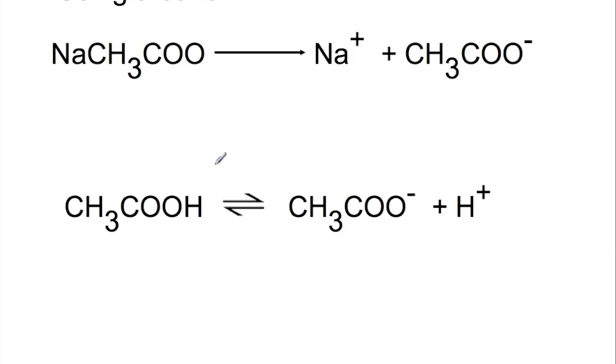How does a buffer work? Here we're looking at a buffer made from sodium ethanoate and ethanoic acid. Because sodium ethanoate is a salt, it will completely dissociate when it's in water. This gives a very high concentration of ethanoate ions. You also have ethanoic acid, which is in equilibrium because it's a weak acid. So you'll only have a small amount of dissociation. We have a large number of ethanoate ions, which will push this equilibrium back towards the left. So you'll mainly have undissociated ethanoic acid.